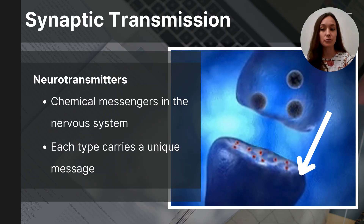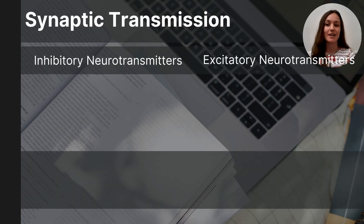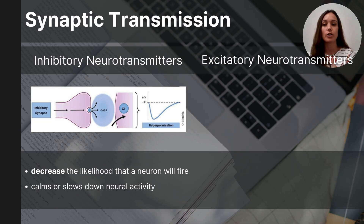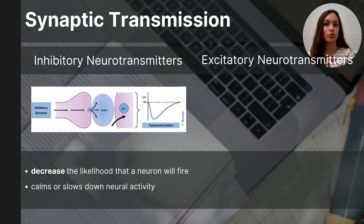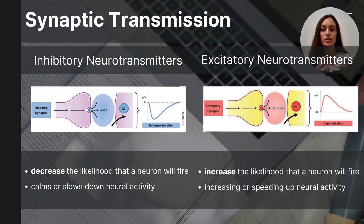Humans have over a hundred different neurotransmitters in their nervous system. In AP psychology, you only need to know eight of them. Some neurotransmitters are inhibitory, which means they decrease the likelihood that a neuron will fire an action potential, effectively calming and slowing the neural activity. Excitatory neurotransmitters are those that increase the likelihood that a neuron will fire an action potential and promote the speeding up of neural activity.